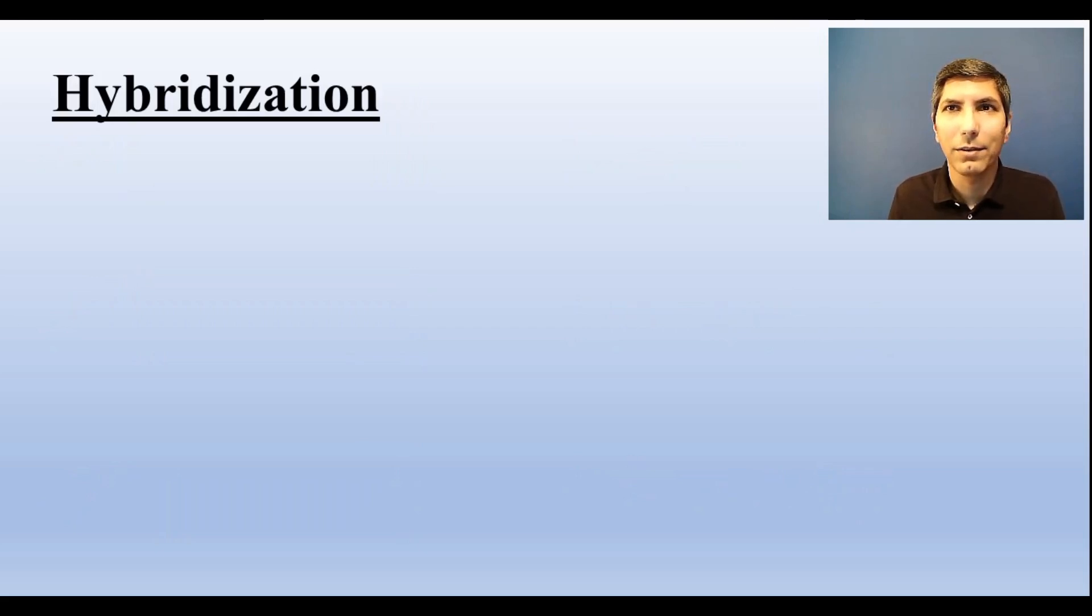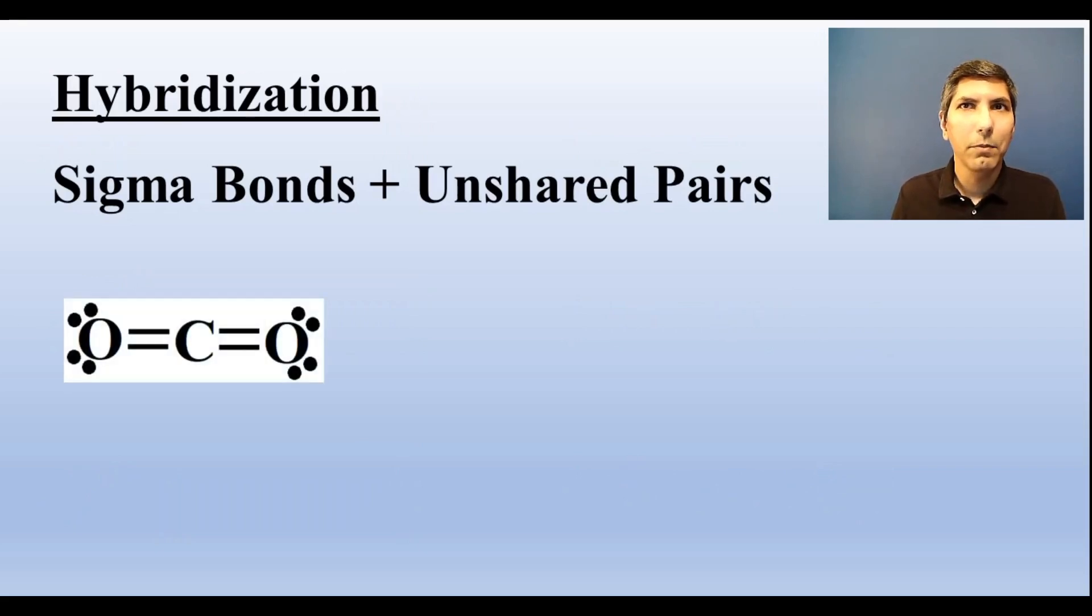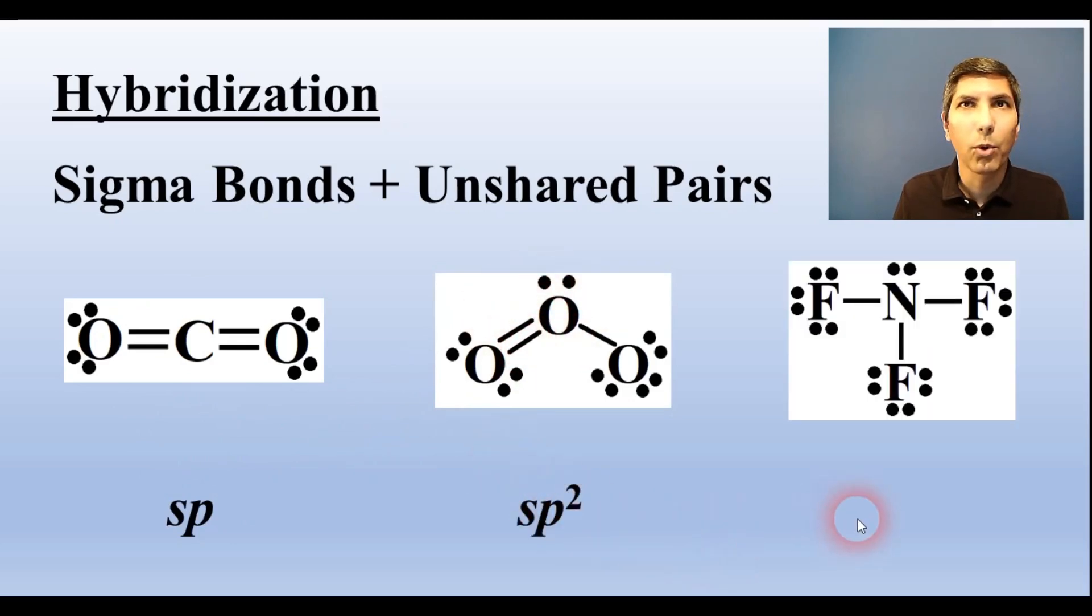You need to be able to determine the hybridization of any central atom in a molecule. Just take the number of sigma bonds on that atom and add in the number of unshared electron pairs touching the central atom. So if the number is two, like it is here, the hybridization is sp. If the total is three, like it is here, you'll choose sp2. And if it's four, like it is in this molecule, the hybridization is sp3.